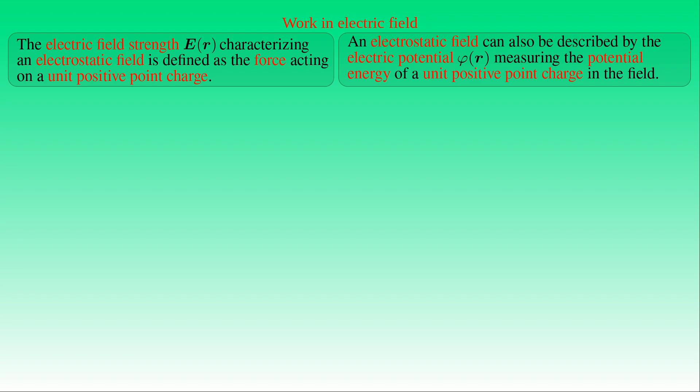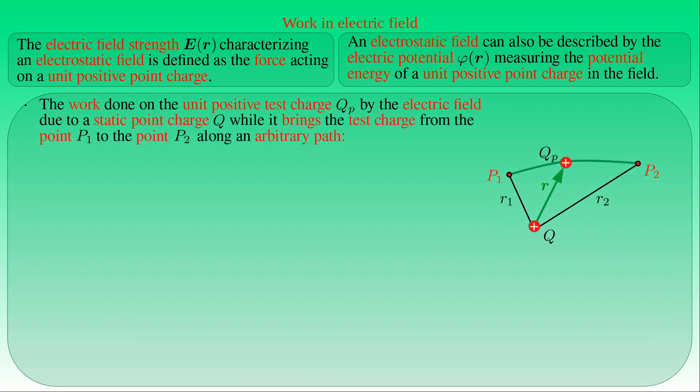First, we compute the work done on a test charge QP by the electrostatic field E due to the point charge Q while it brings the test charge QP from point P1 to point P2 along an arbitrary path without acceleration. We can imagine it as an infinitely slow process where acceleration of the test charge is neglected. This condition means we do not need to account for electromagnetic effects due to accelerating charges, which would modify the energy balance equation of the moving charge.